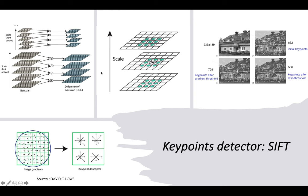For SIFT, we first compute the Difference of Gaussians so that we can get clear edges in the picture. We then assign a scale for each keypoint, which allows us to get the gradient and gradient direction for each keypoint.